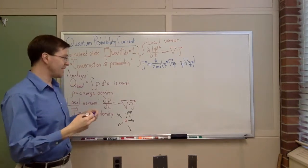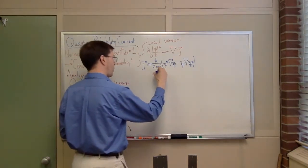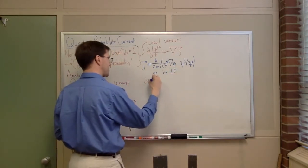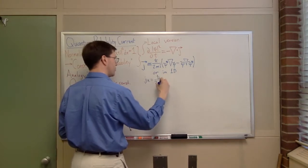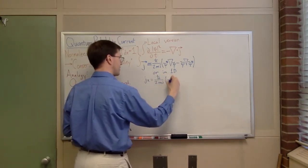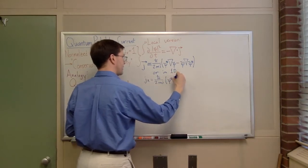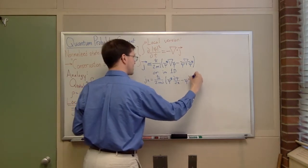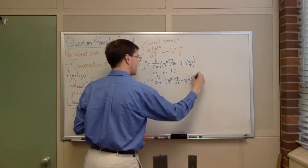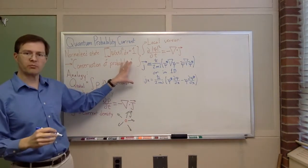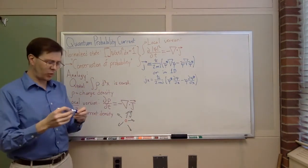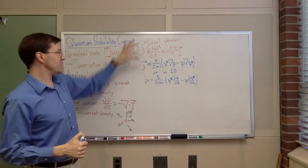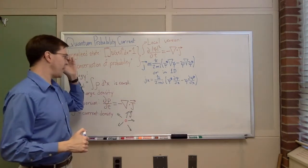Or in one dimension, for the simple case: j_x = (ℏ/2mi) times [psi* (d psi/dx) − psi (d psi*/dx)]. That's our quantum probability current. Interpreting this is a little weird — it's a strange expression — but you can derive it from Schrödinger's equation if you just take this derivative, and you'll find this is true.